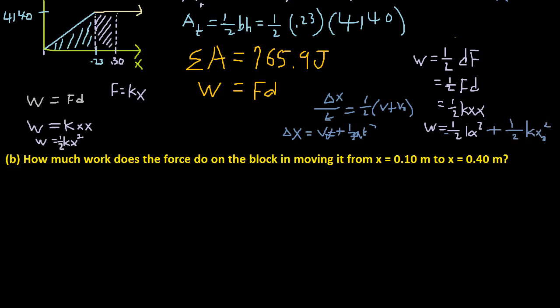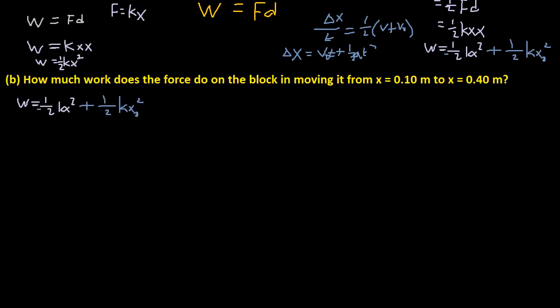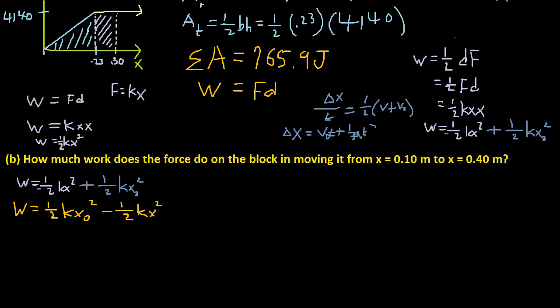So 1 half k x naught x naught squared. I hope this makes sense, at least a little bit of sense. So let me move. And then, if you rearrange this, you just get 1 half k x naught squared. I'm just putting the positive first. Minus, because this is a minus sign right here. Minus 1 half k x squared. So that's what the work is.